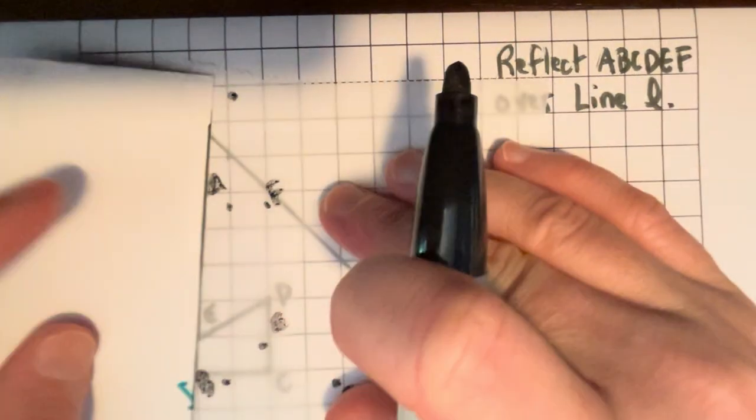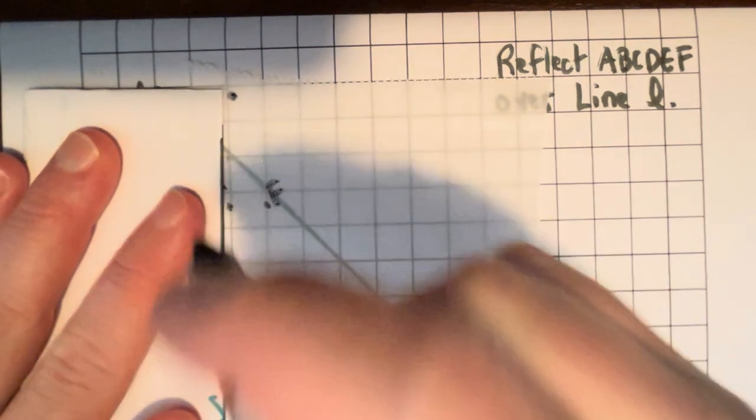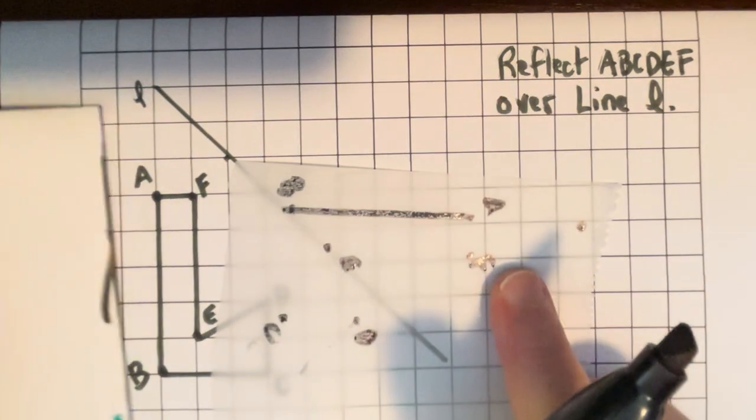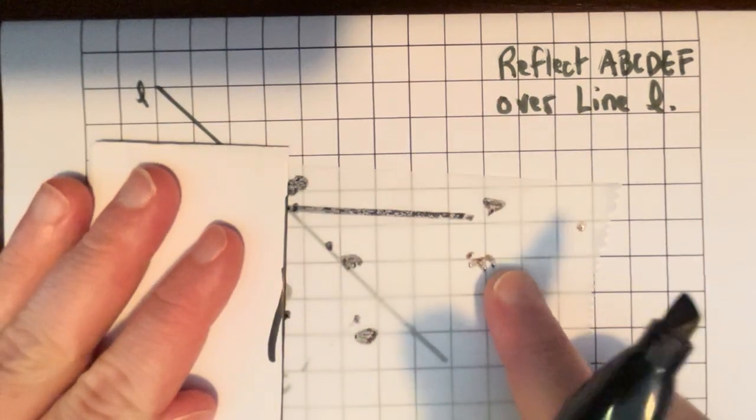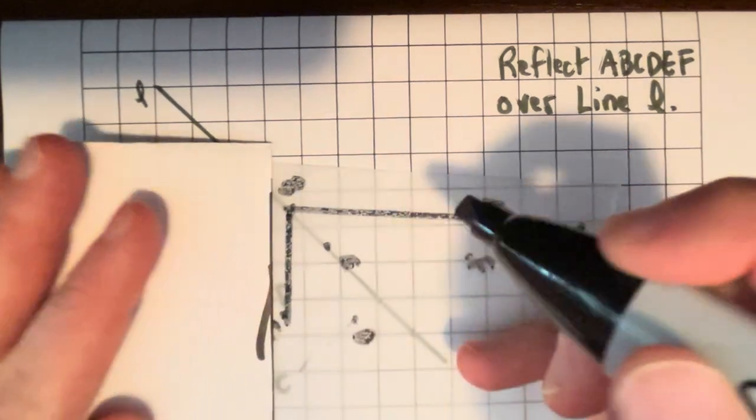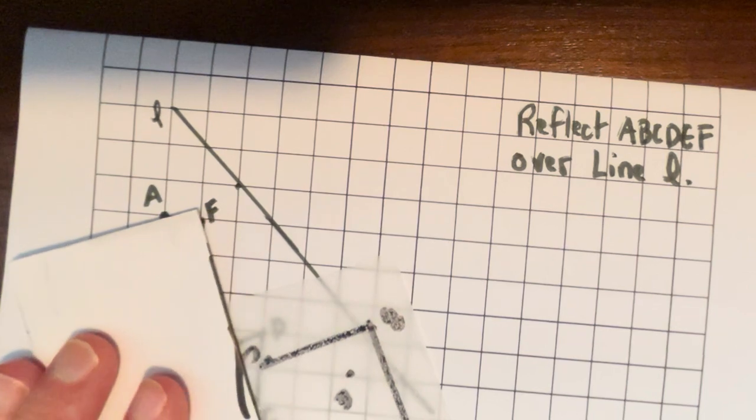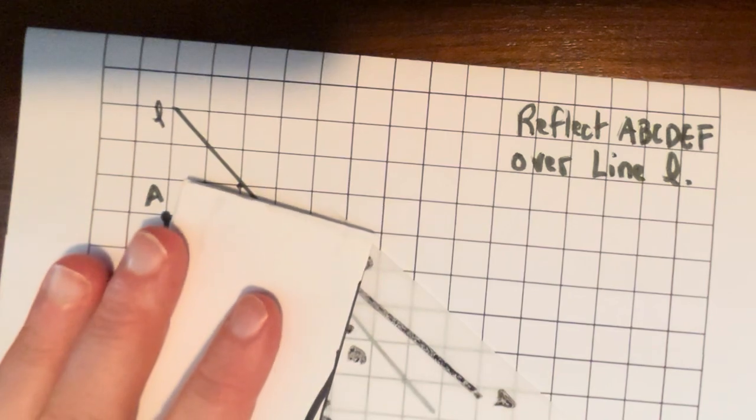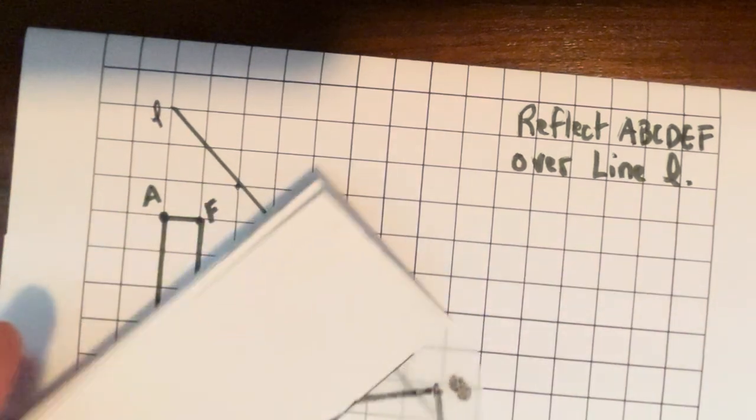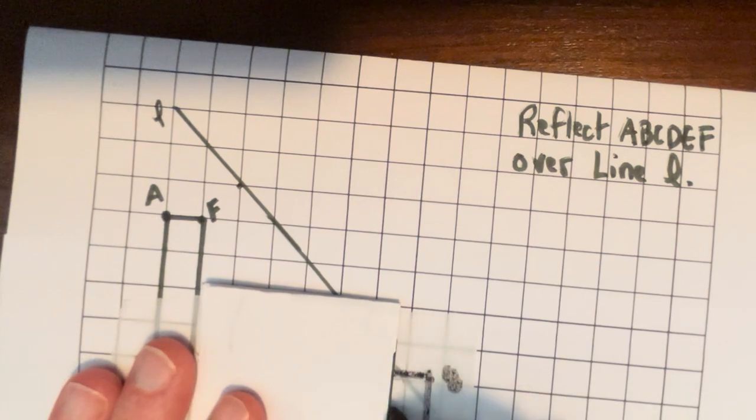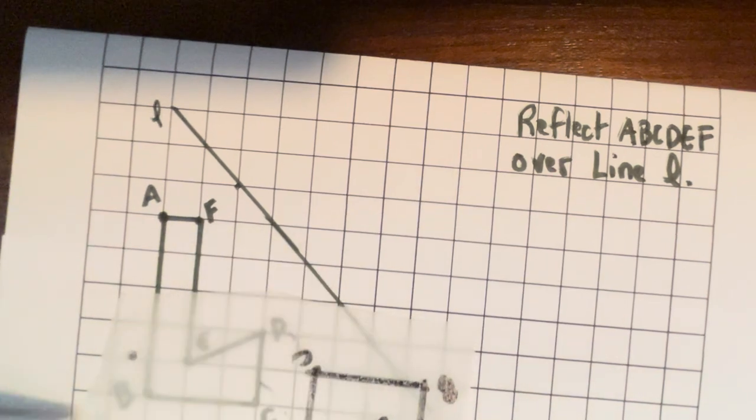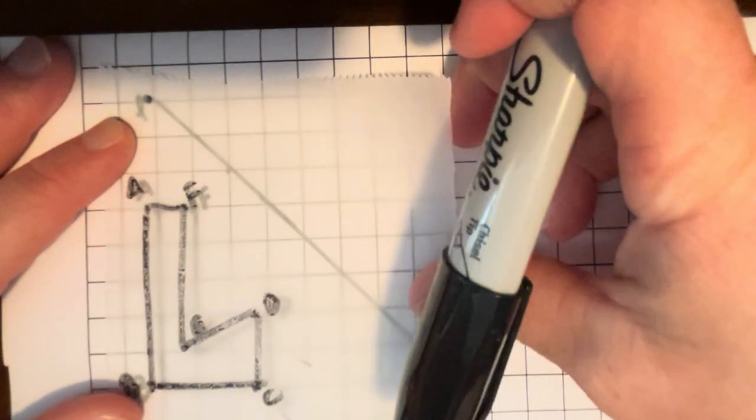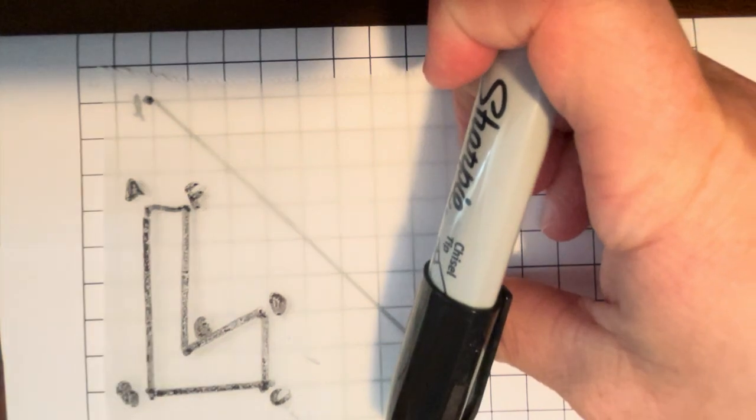And then I'm going to mark where my line is. You can use a ruler or any fancy straight edge to trace it. You don't really have to trace the edges of your shape. I don't know, I think it kind of helps you see what's happening. And then I am also going to trace the mirror line.